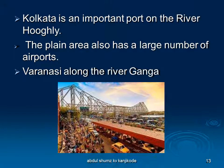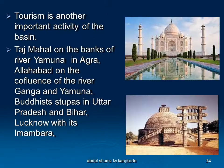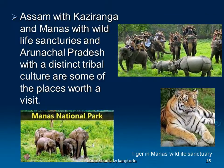Tourism is also an important activity in this basin. The Taj Mahal on the banks of river Yamuna in Agra, and Allahabad, famous for the confluence of rivers Ganga and Yamuna, are key attractions. Buddhist stupas in Uttar Pradesh and Bihar, and Lucknow's Imambara, are also notable. Assam has the Kaziranga and Manas wildlife sanctuaries. Arunachal Pradesh has a distinct tribal culture. These places are all worthy of a visit. This concludes our discussion on life in the Ganga-Brahmaputra basin. Jai Hind.